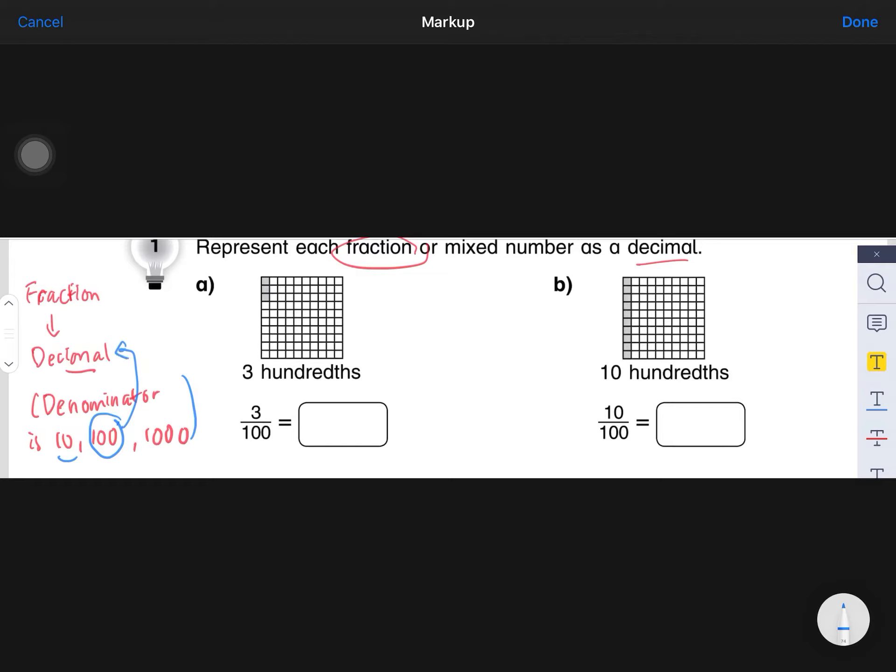So this is 3/100. What does it mean by 3/100? That means this one whole is divided into 100 parts, 100 equal parts, and only 3 are shaded. So this is the total.